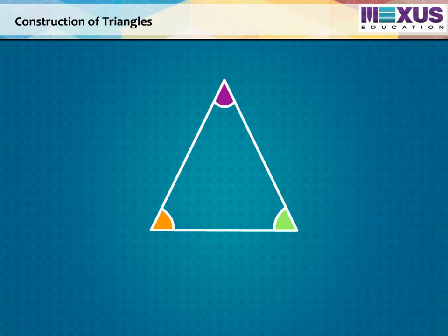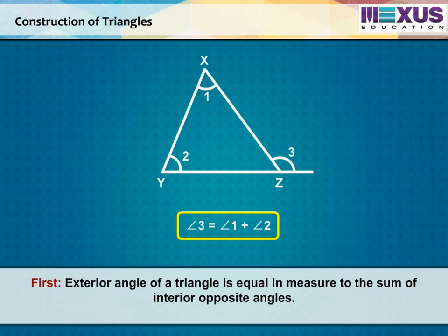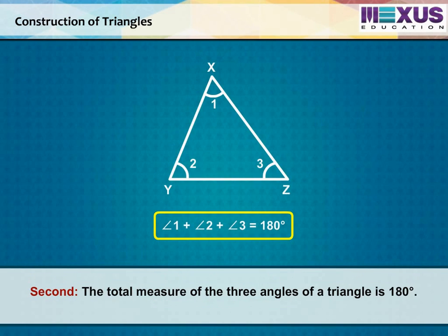Let's see their properties. First, exterior angle of a triangle is equal in measure to the sum of interior opposite angles. Second, the total measure of the three angles of a triangle is 180 degrees.